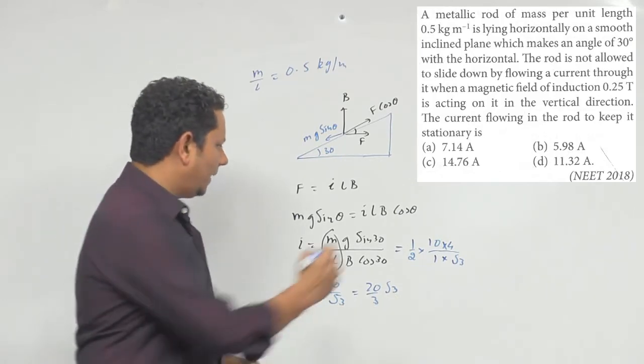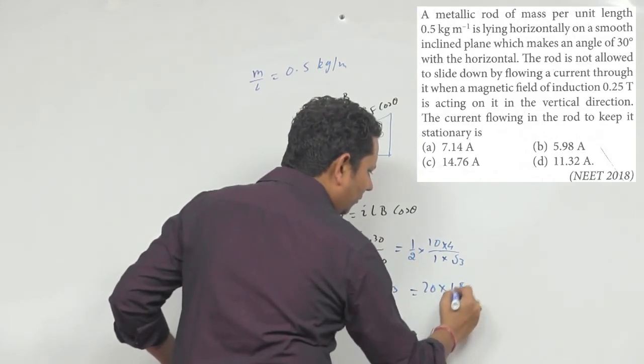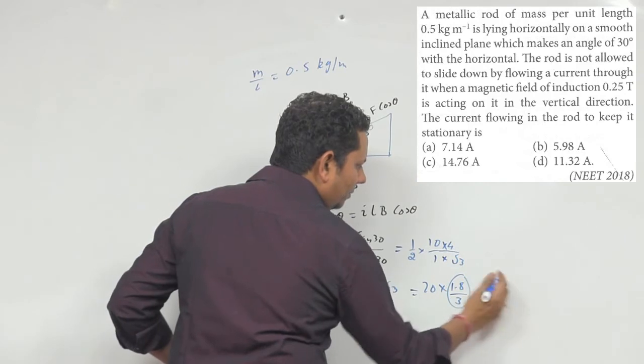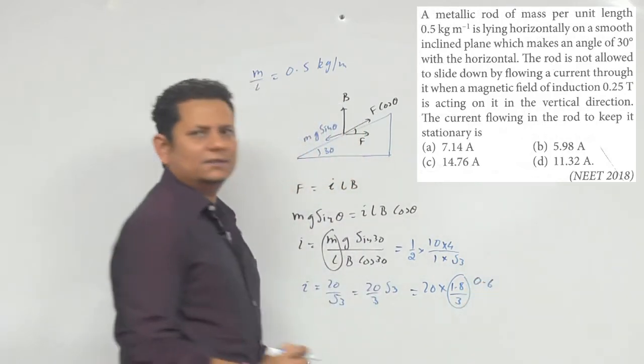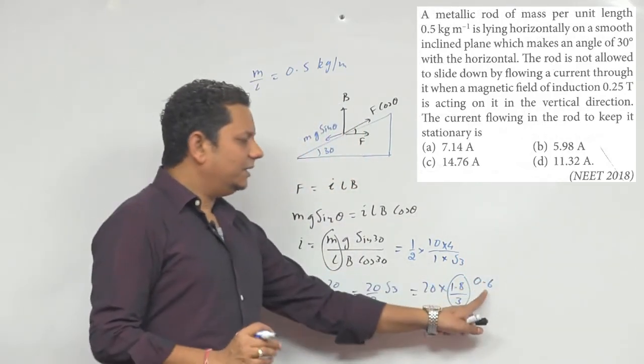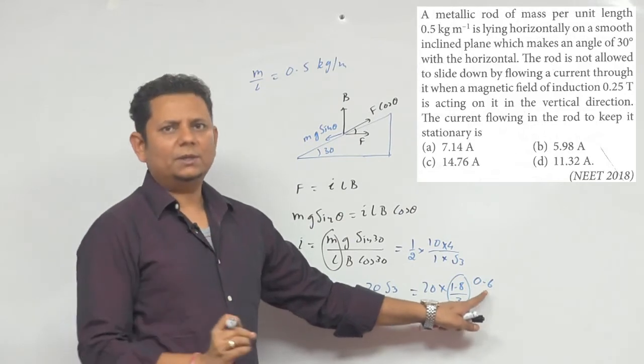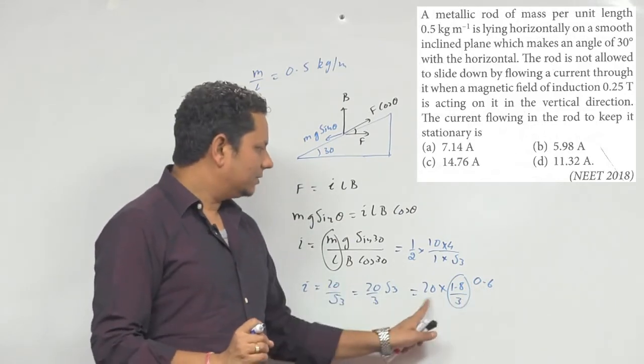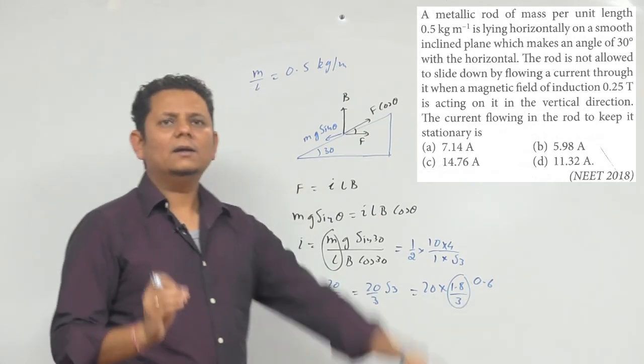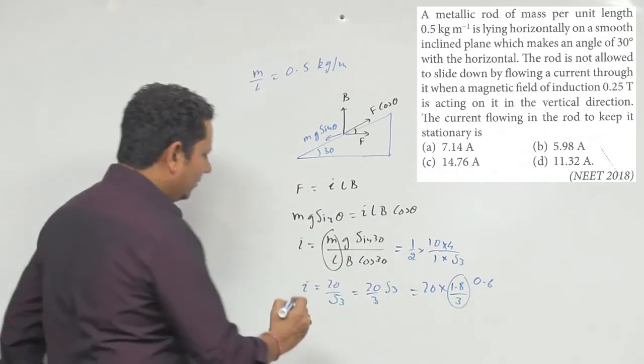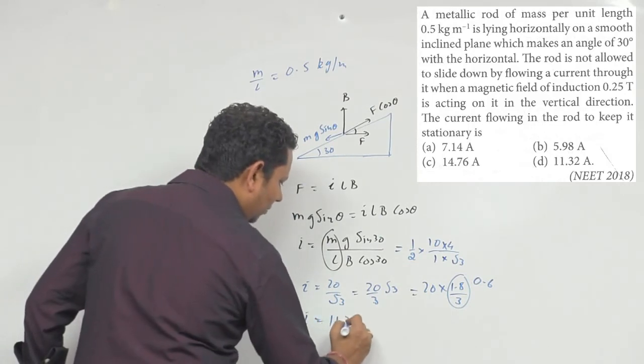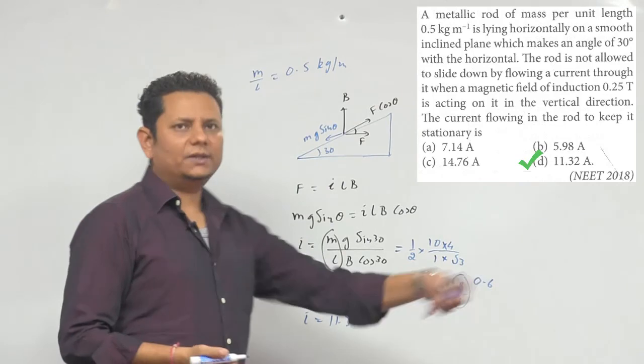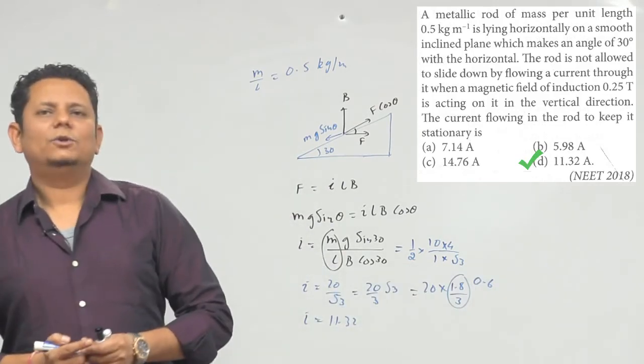Sin 30 divided by cos 30 gives root 3. So we get 20 multiplied by 1.8 divided by root 3, this is approximately 0.6 times 20, which equals 12 divided by root 3. This value comes to 11.32 amperes. So 11.32 amperes, option number D would be the right answer.